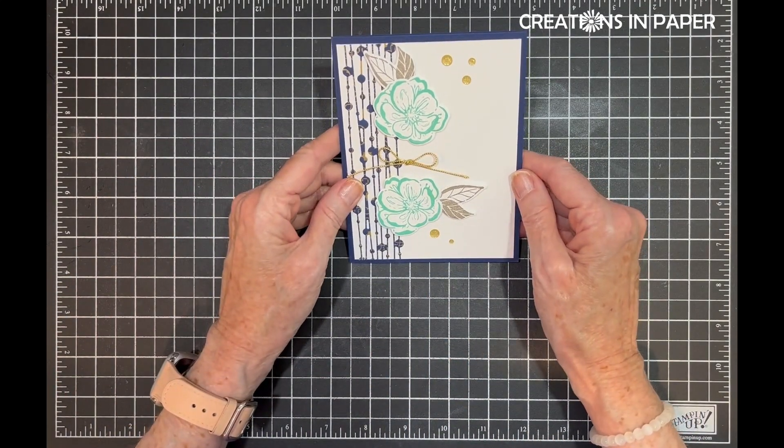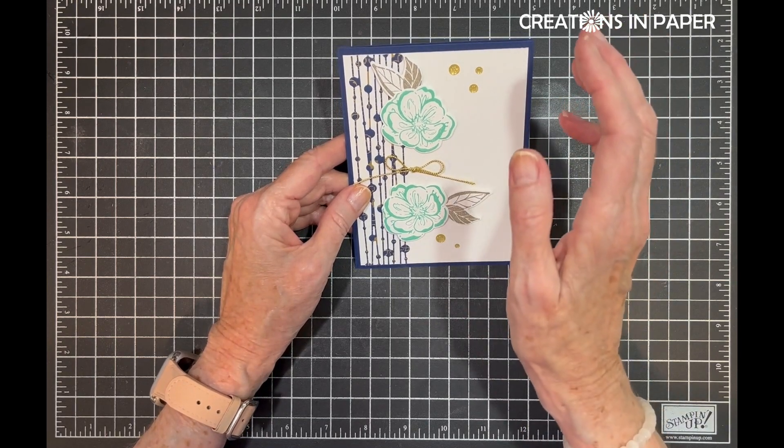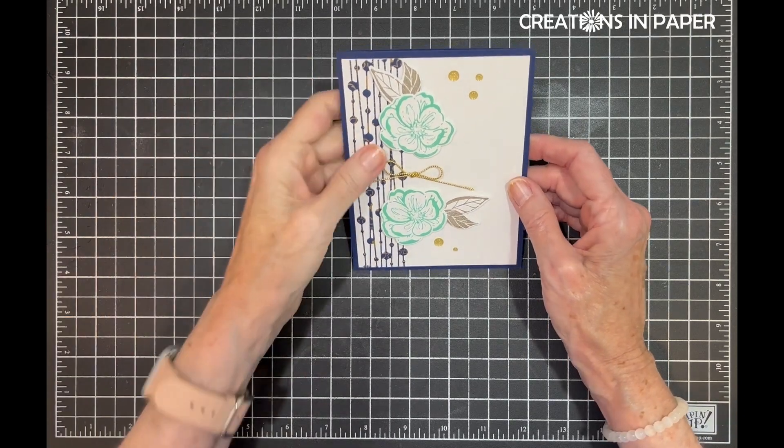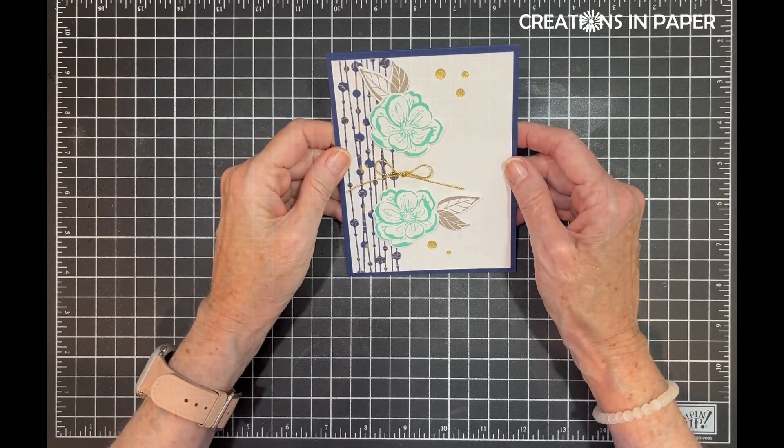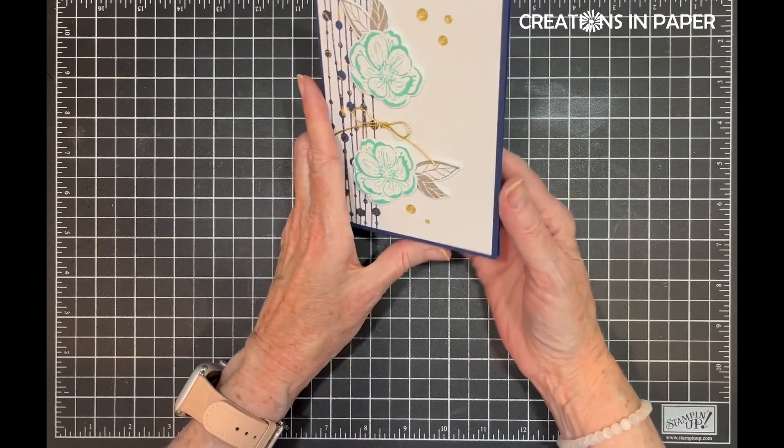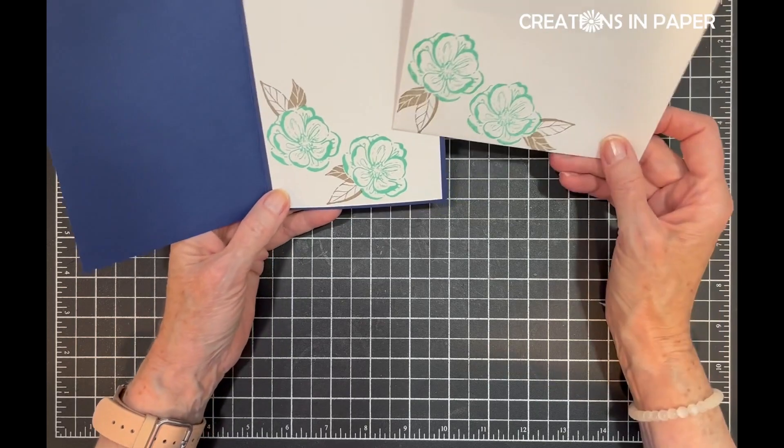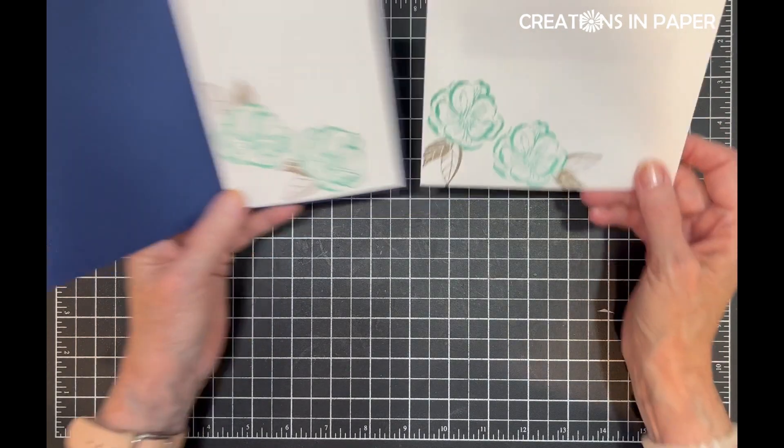And there's card two for this challenge. Now, if you want, you can put a sentiment in here. I typically don't use sentiments on my cards until I mail them out. That way I could make this happy birthday, hello, thinking of you, whatever I want. And again, I use those same two flowers or the same flower and leaves to decorate the inside of my card and envelope.